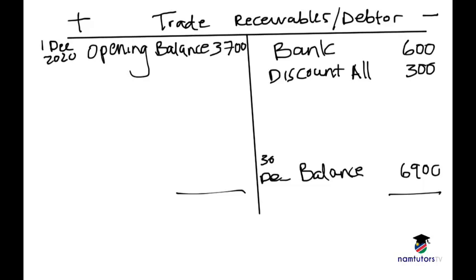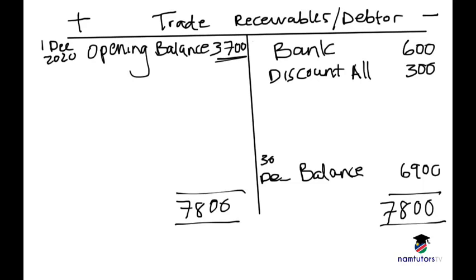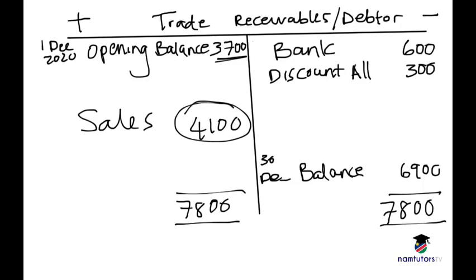We need to put in the blocks the amounts for whichever side — debit or credit — is largest. The credit side is the largest at 7,800. So 7,800 minus 3,700 gives us the missing figure of 4,100, which is your credit sales. The account must always balance, so the missing amount is your sales.